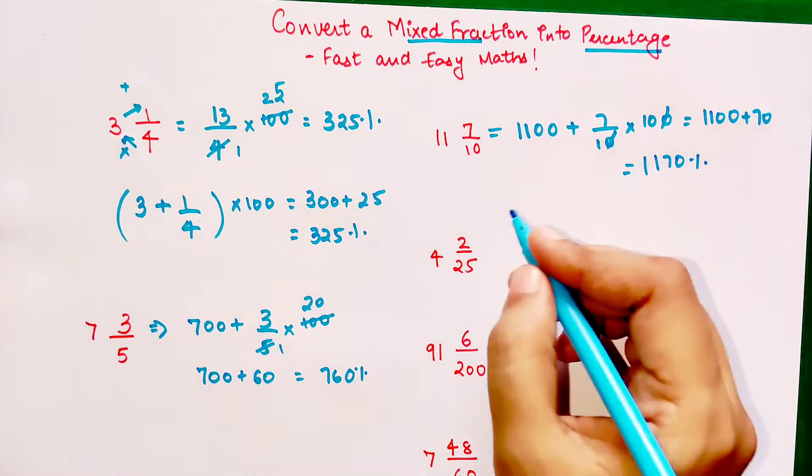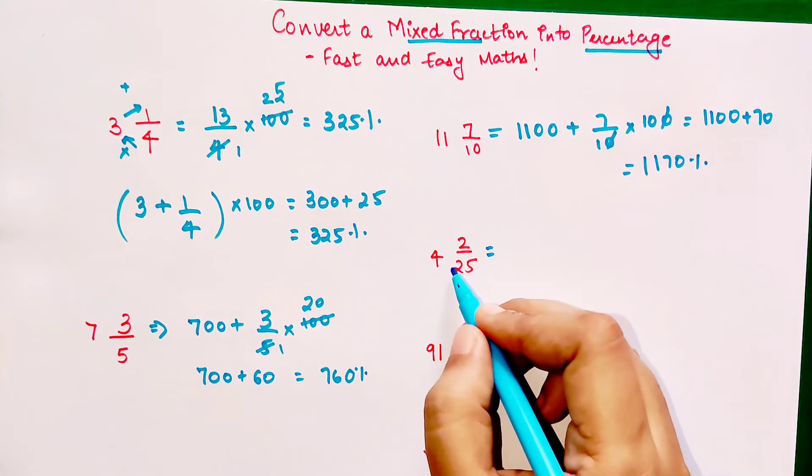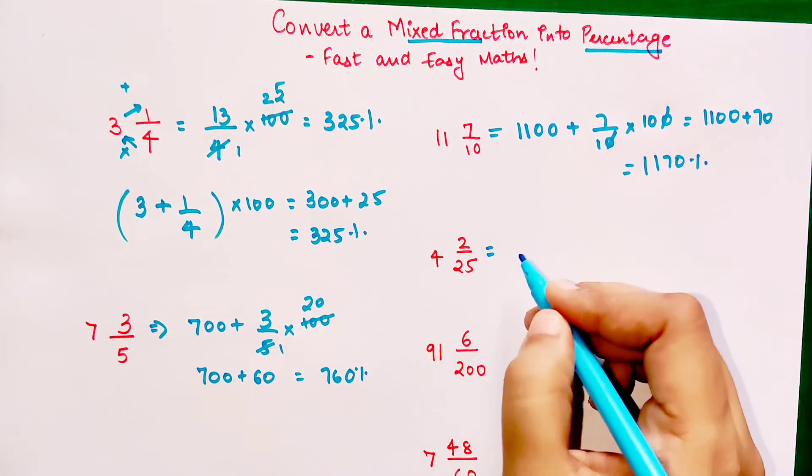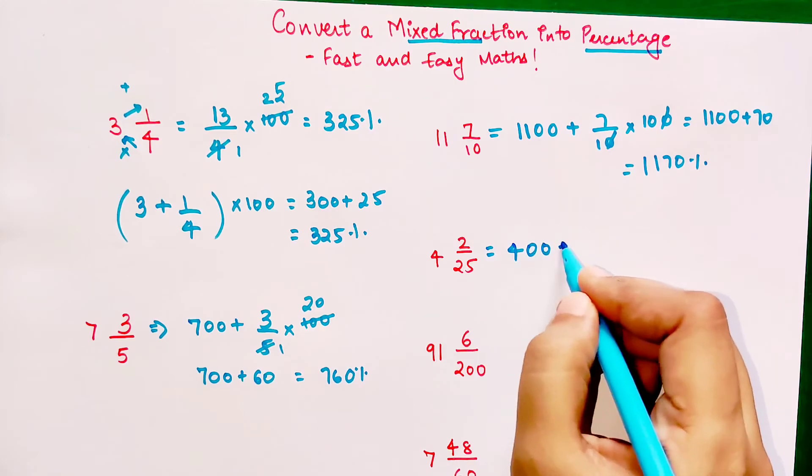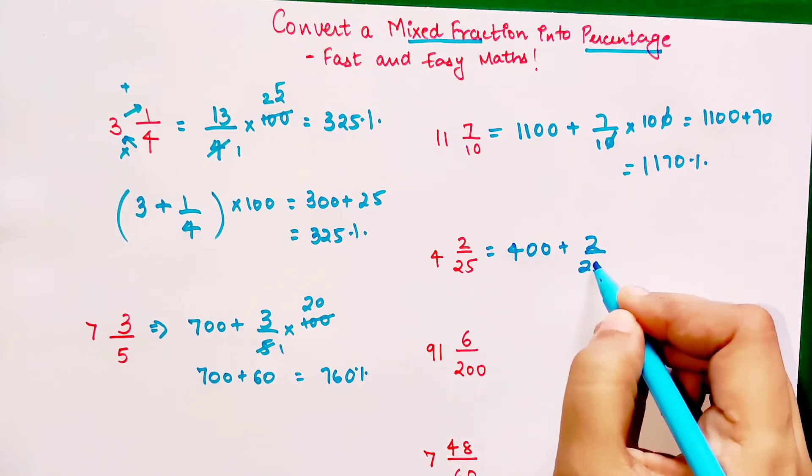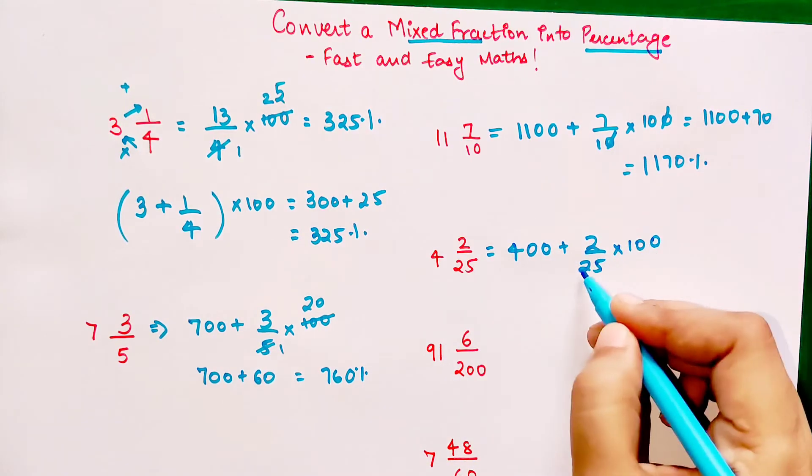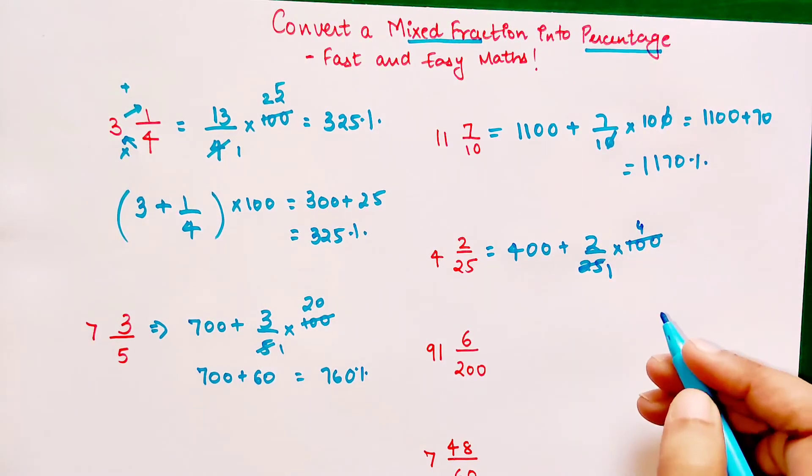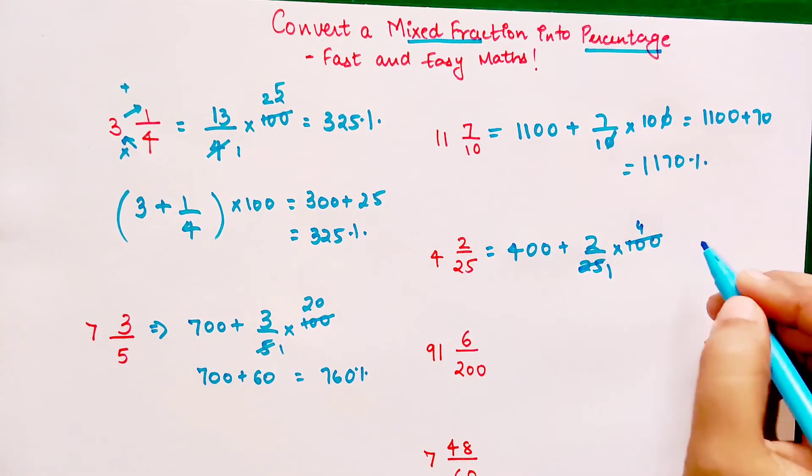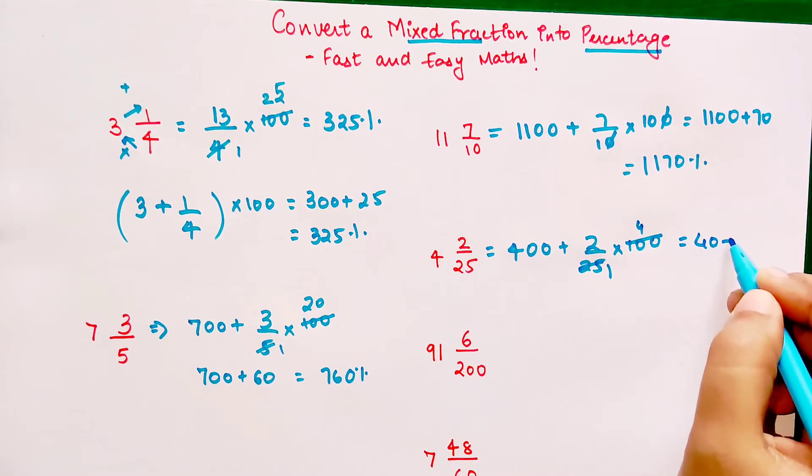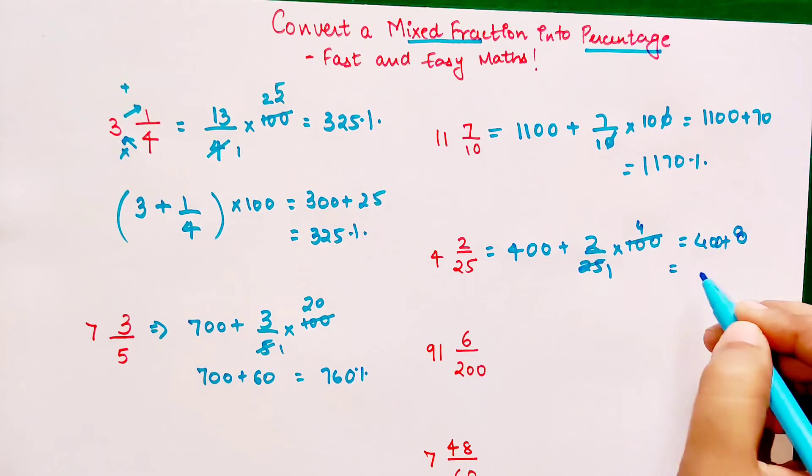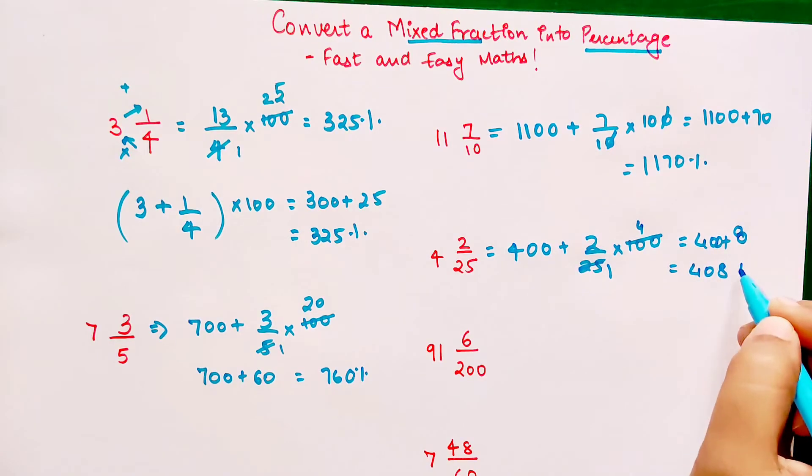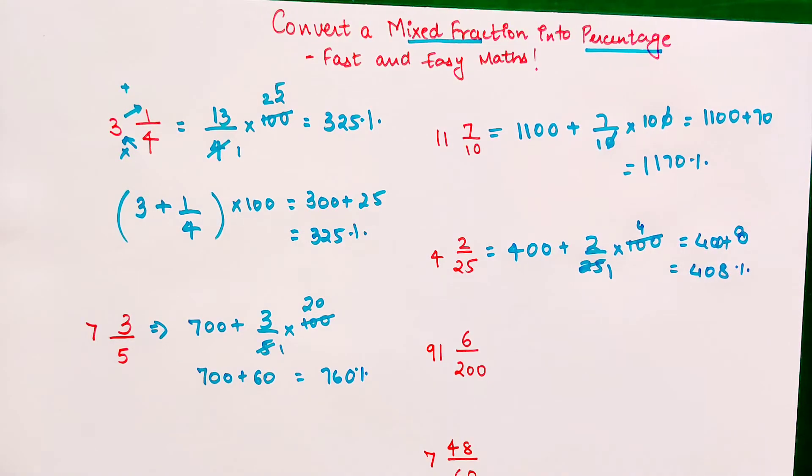Here also we have 4 into 100 which is 400, plus 2/25 into 100. 25 fours are 100, so we get 400 plus 8, and your answer is 408 percent.